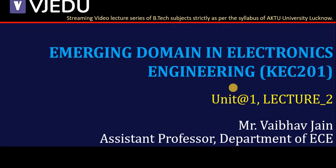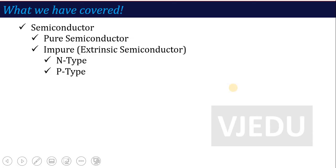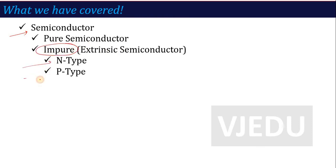In the previous lecture, we discussed semiconductor basics — what is a semiconductor, its definition, and the two semiconductors we talk about in electronics: silicon and germanium. We studied how an intrinsic semiconductor is made, and how an impure semiconductor is made in two categories — n-type and p-type.